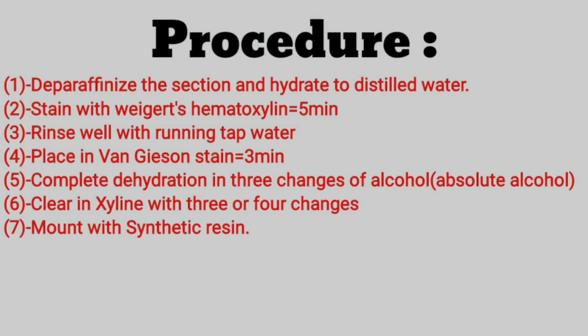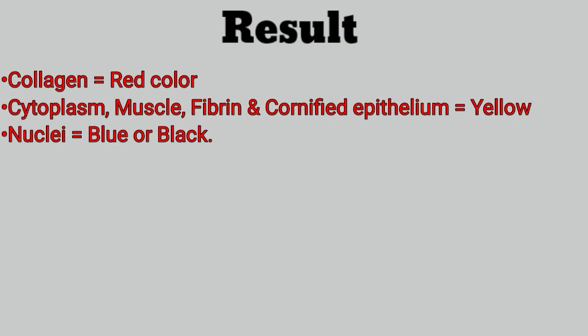Fourth, place the slide in Van Gieson solution for 3 minutes. Fifth, complete dehydration with 3 changes of 100% alcohol — we have 3 jars and place the slide in each. Sixth, clear in xylene with 3 or 4 changes. Seventh, mount with synthetic resin; DPX is not used here. Result: under the microscope, collagen appears red; cytoplasm, muscle, fibrin, and cornified epithelium show yellow color; and nucleus shows blue or black color.